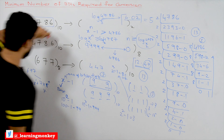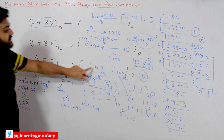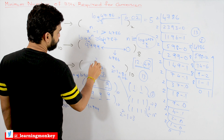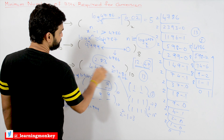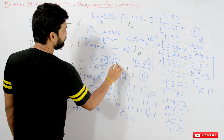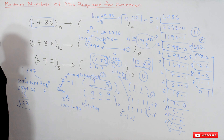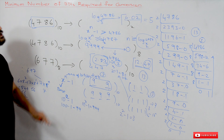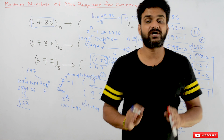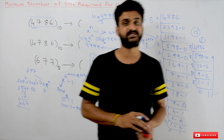Similarly, applying log base 10 to 677 (base 8 converted to decimal = 447) gives approximately 2.83, and taking the ceiling value gives 3. So the minimum number of digits required to represent that number in base 10 is 3. This is how we find the minimum number of bits required to convert a given number into another number system.